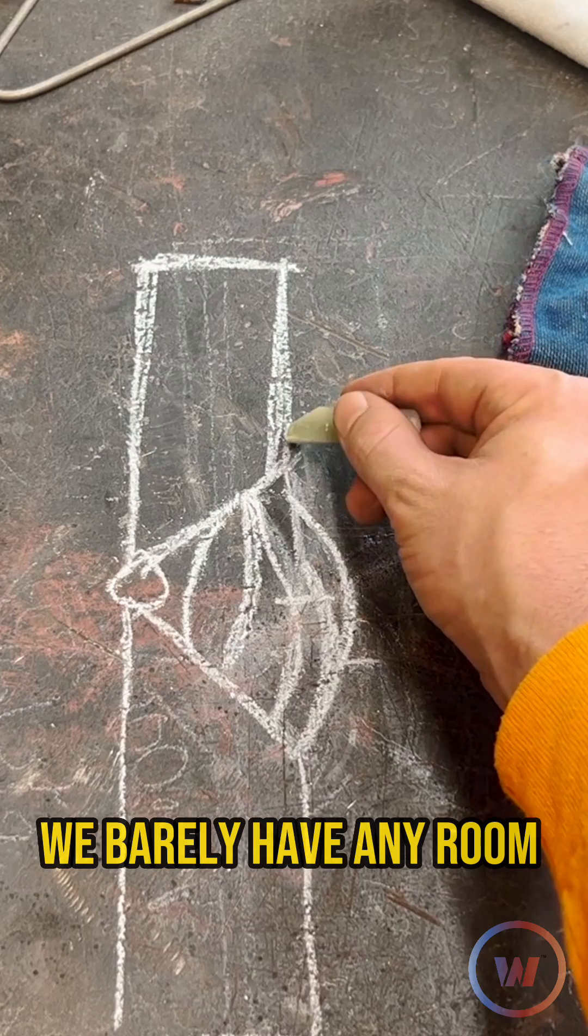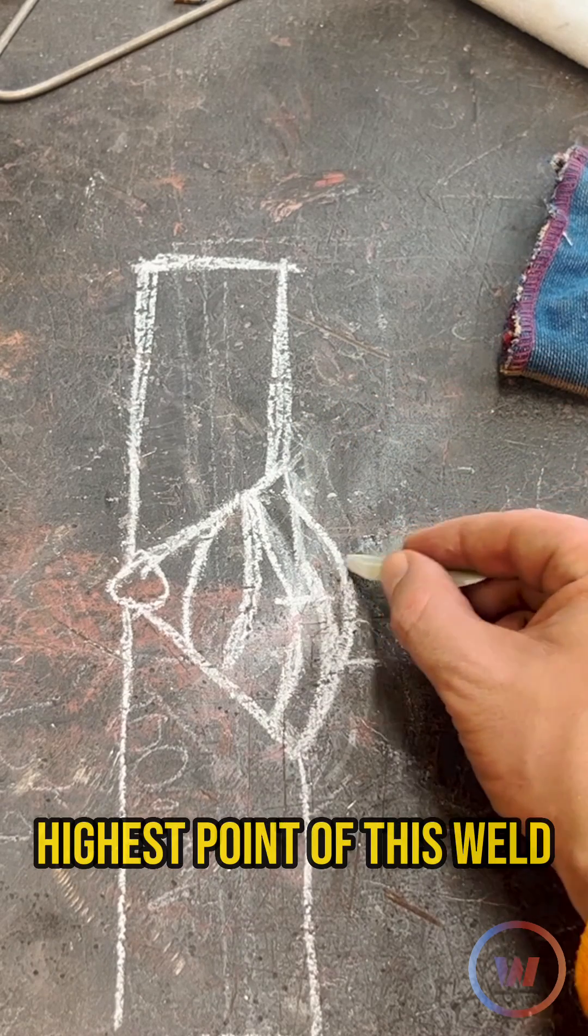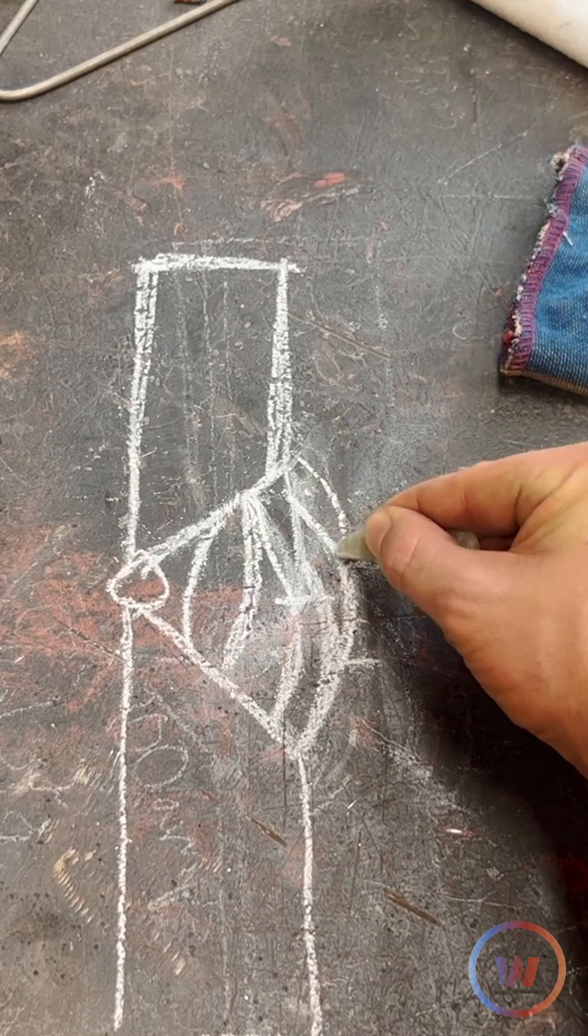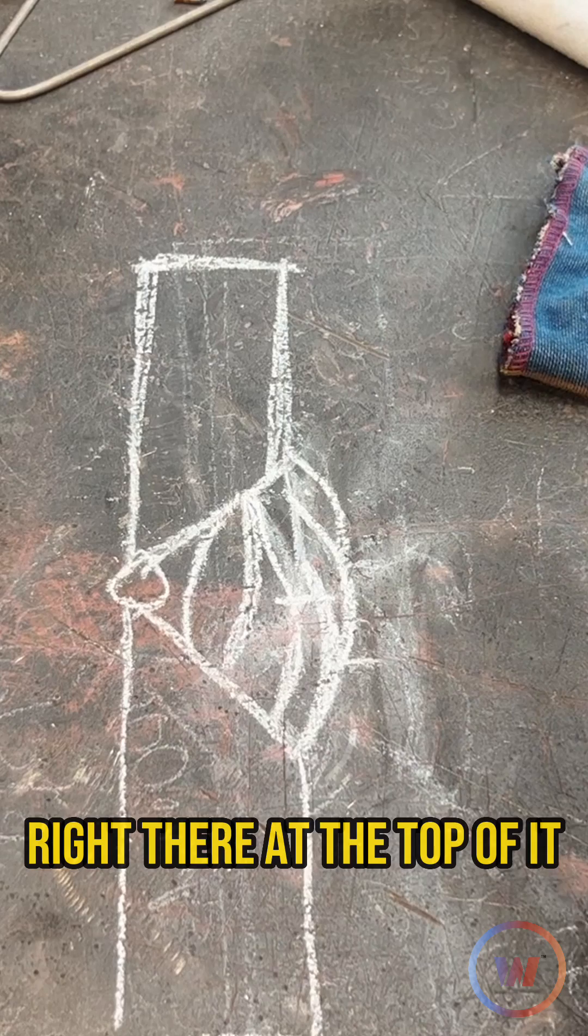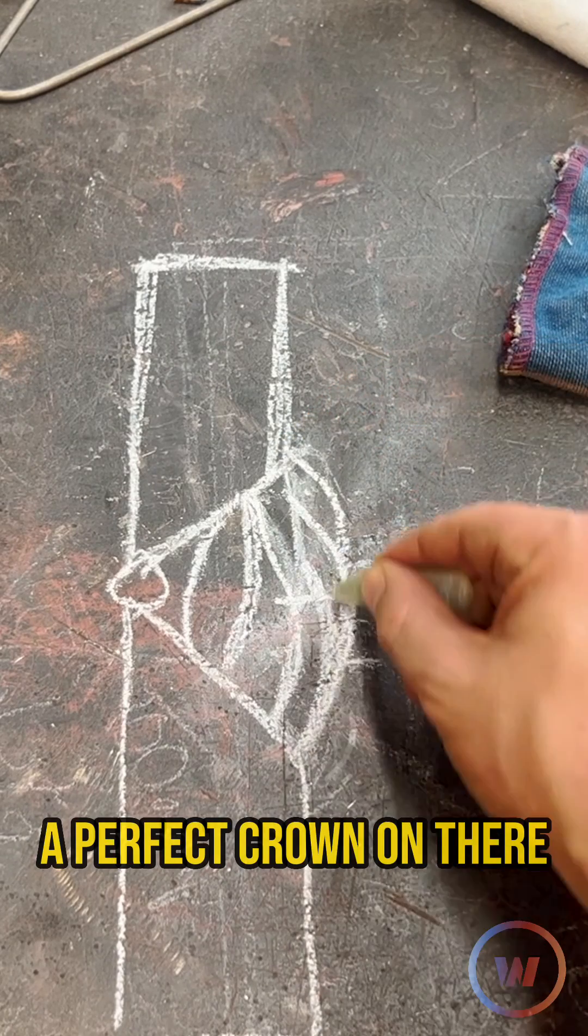And then look, we barely have any room to have to tie in up here. We have to get to the highest point of this weld, but our third bead is probably going to be our smallest bead and it's going to tie in right there at the top of it. And this is going to let us have a perfect crown on there.